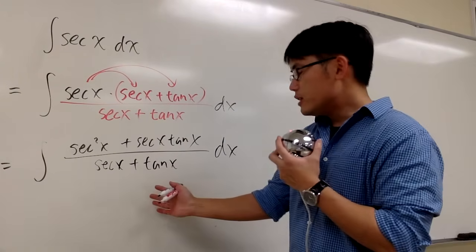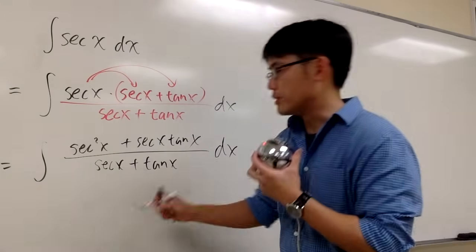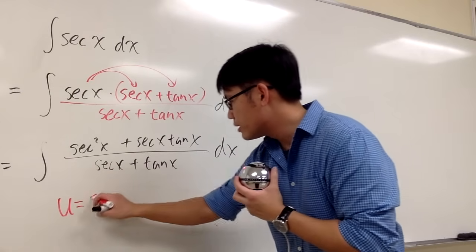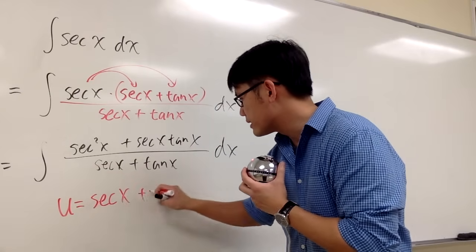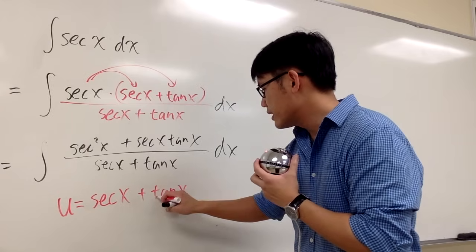This is easier because now we can use a u substitution, that u equals to the denominator, which is sec x plus tangent x.